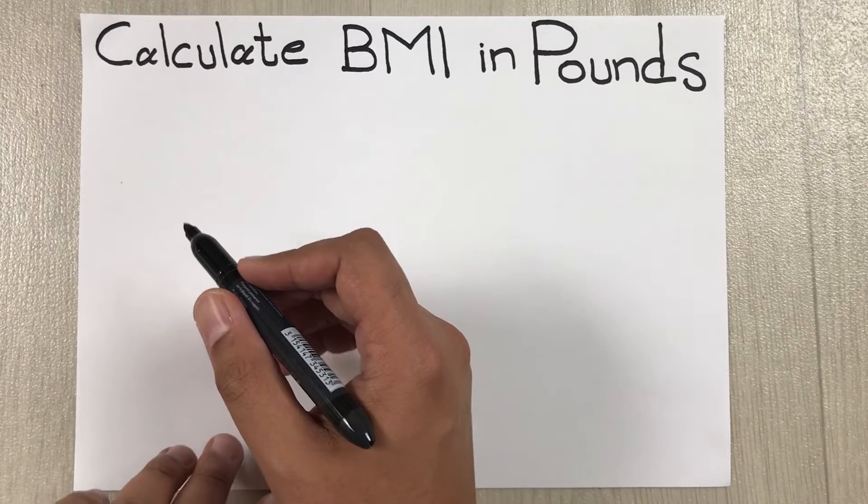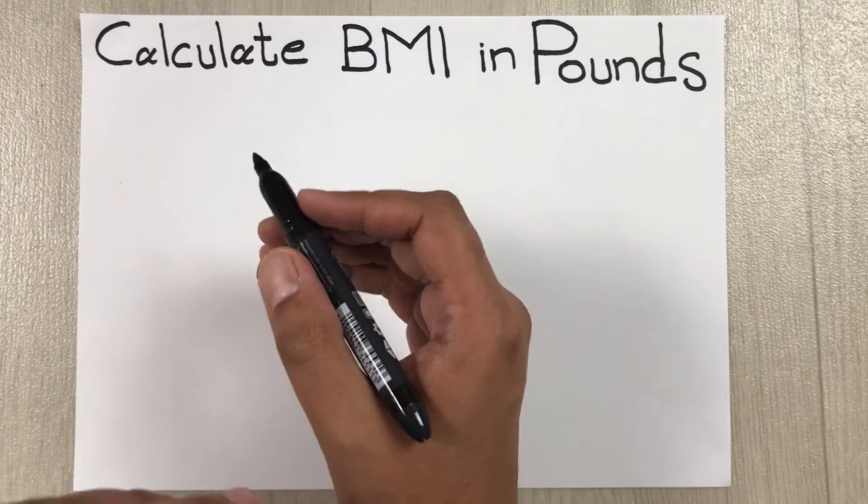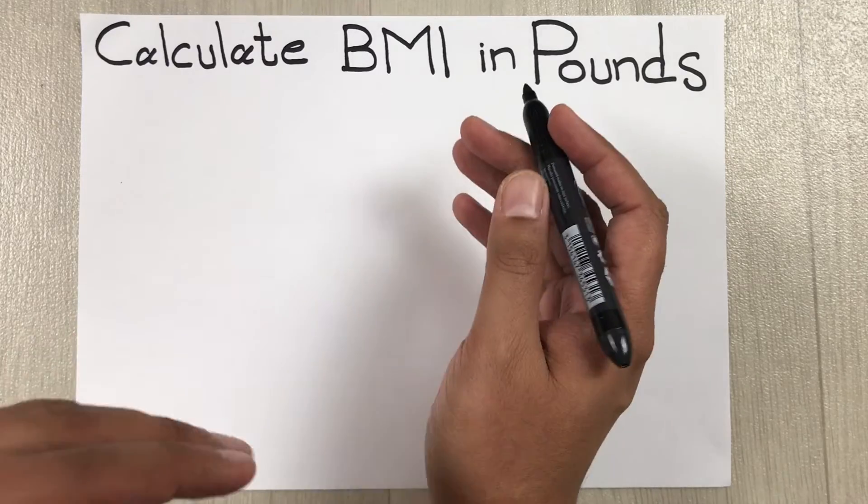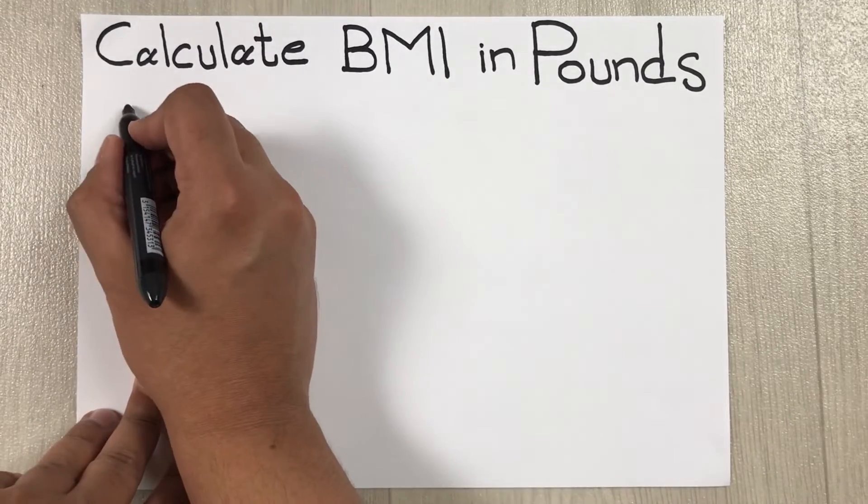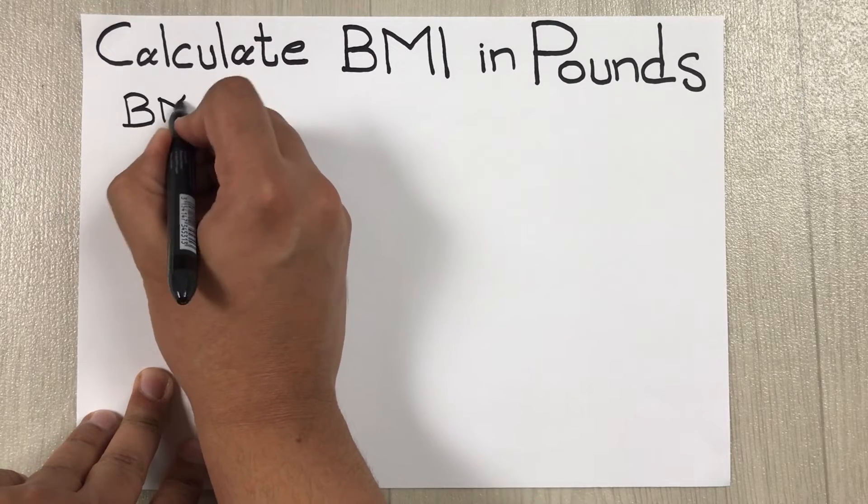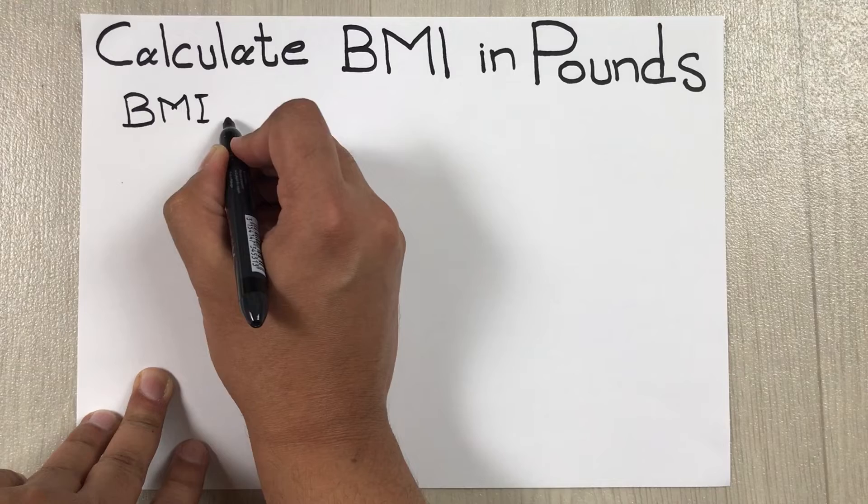Hello guys, I hope you are doing really well. In today's video I am going to show you how to calculate BMI in pounds. The formula to find out the BMI in pounds is BMI equals weight in pounds divided by height in inches squared, multiplied by 703.